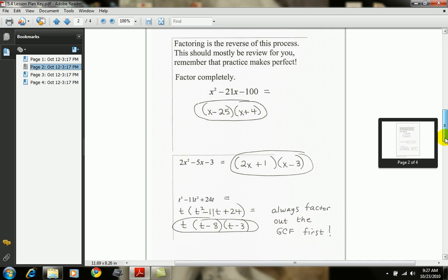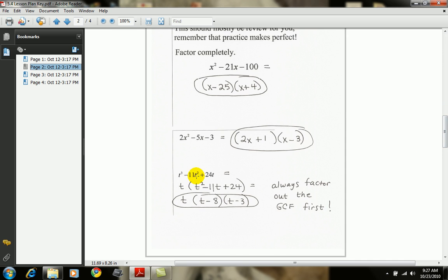And the last one I want to look at on this movie: t cubed minus 11t squared plus 24t. The first step, always, is to take out your GCF. In this case you take out a t, leaving me with t squared minus 11t plus 24. This t stays in front, but this trinomial can be factored using FOIL.